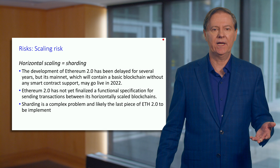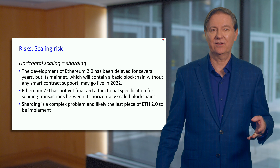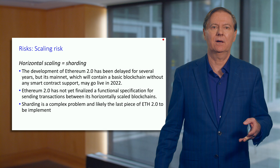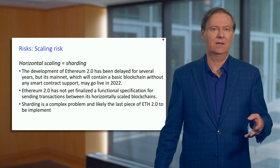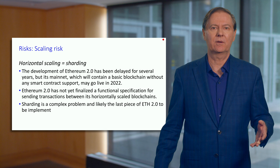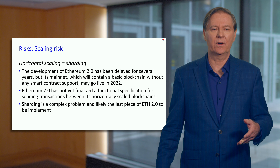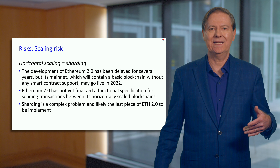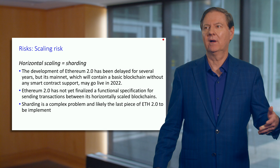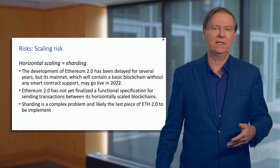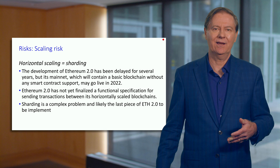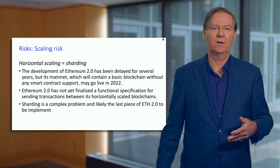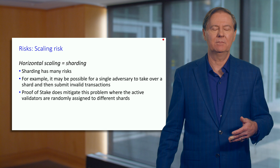Ethereum 2 with sharding alone can do 50,000 transactions per second, which is a massive improvement compared to what we have today. The sharding proposal right now is 64 different shards. This has not been settled yet — there's a lot of detail that hasn't been worked out, but it's definitely moving forward.